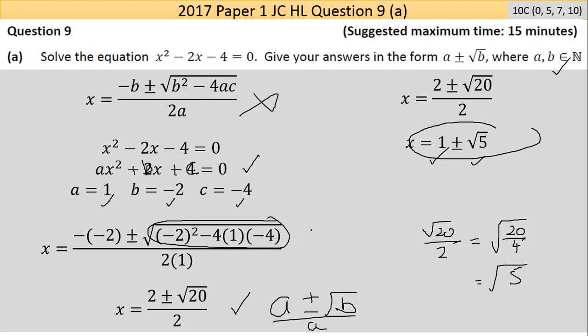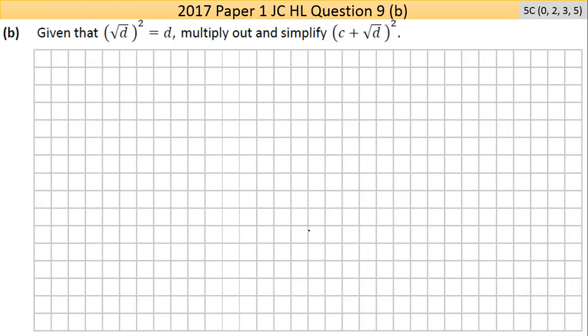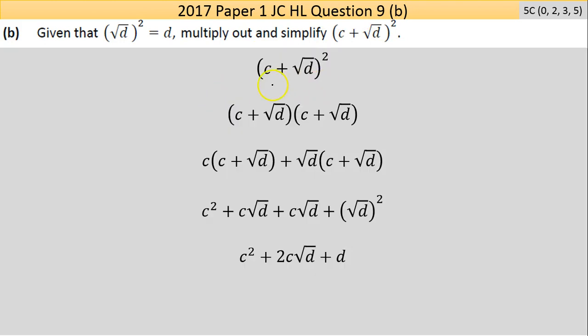Now Part B. Given that the square root of d all squared equals d, multiply out and simplify c plus square root of d all squared. Remember what squared means is multiplying something by itself.